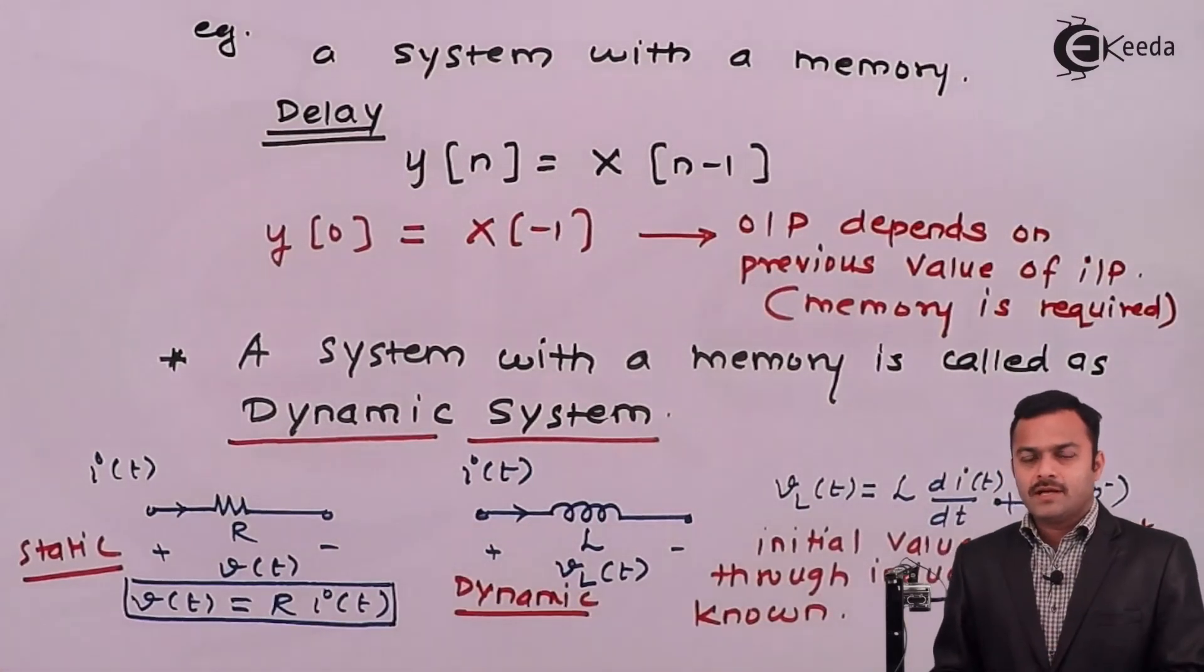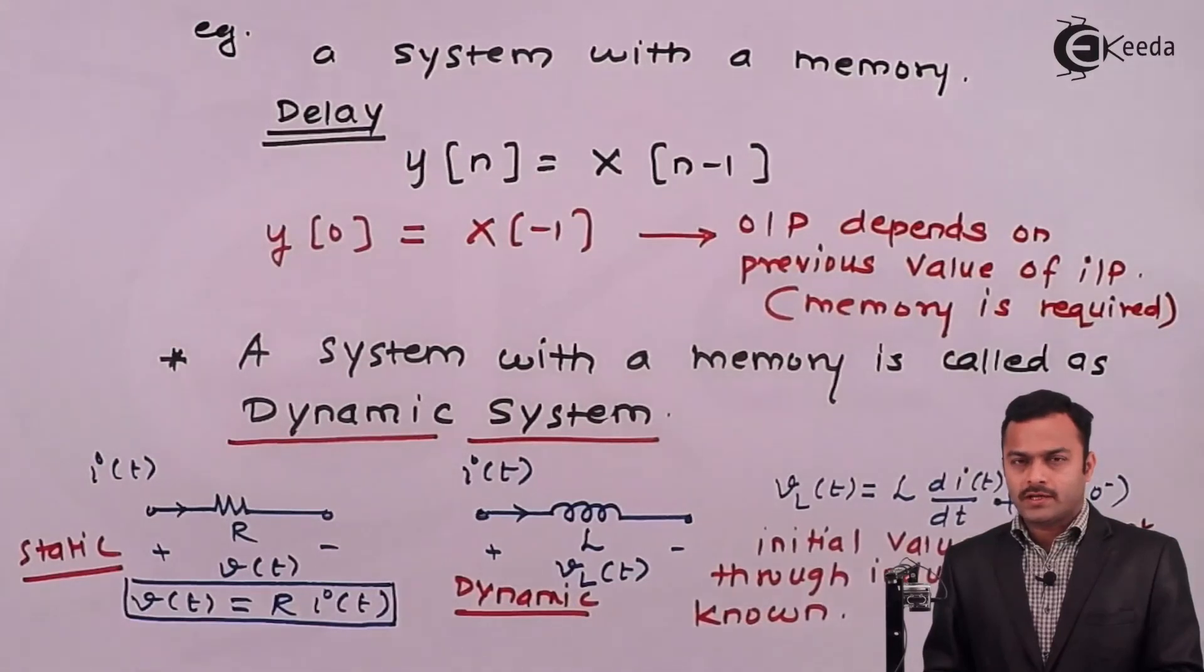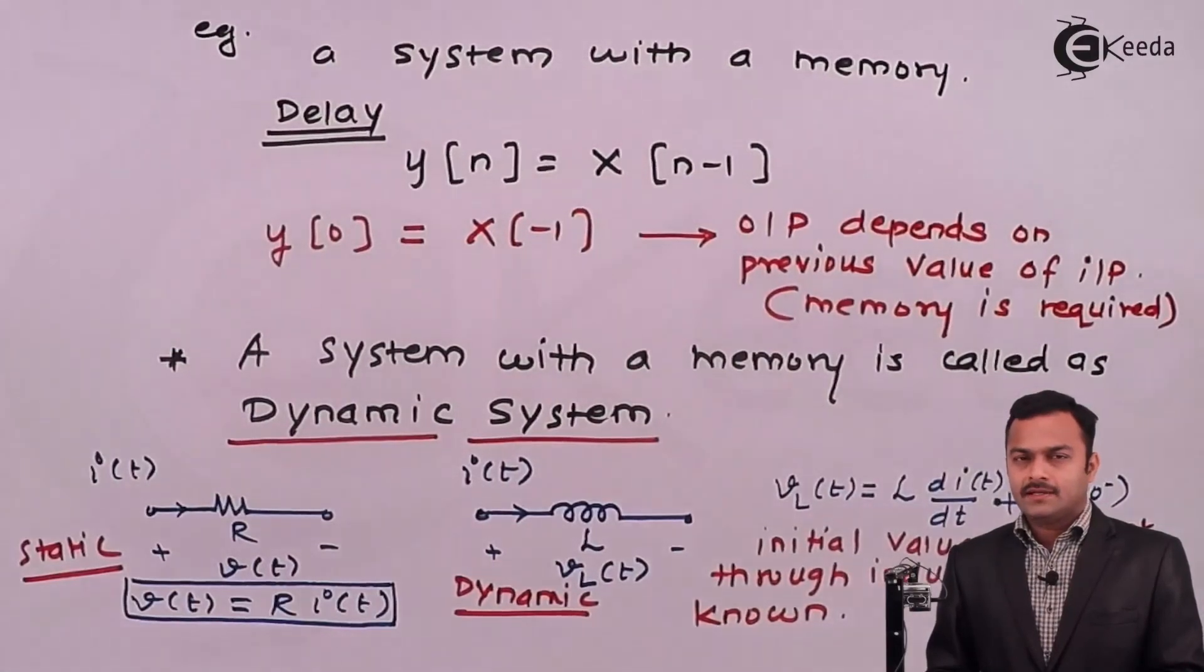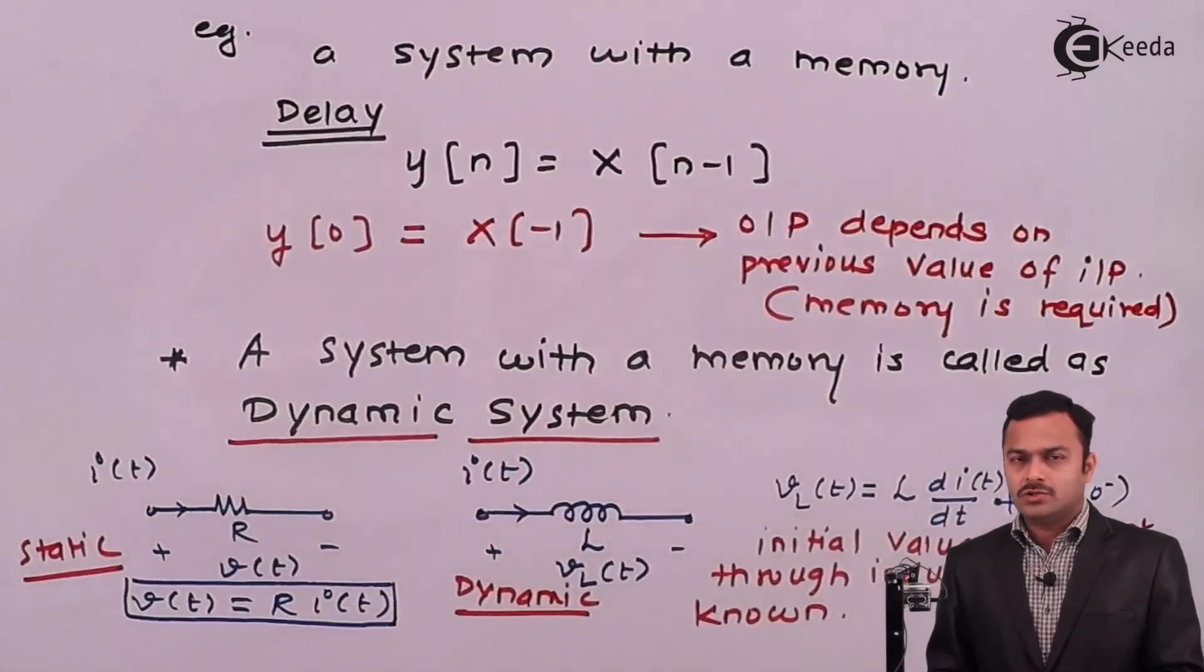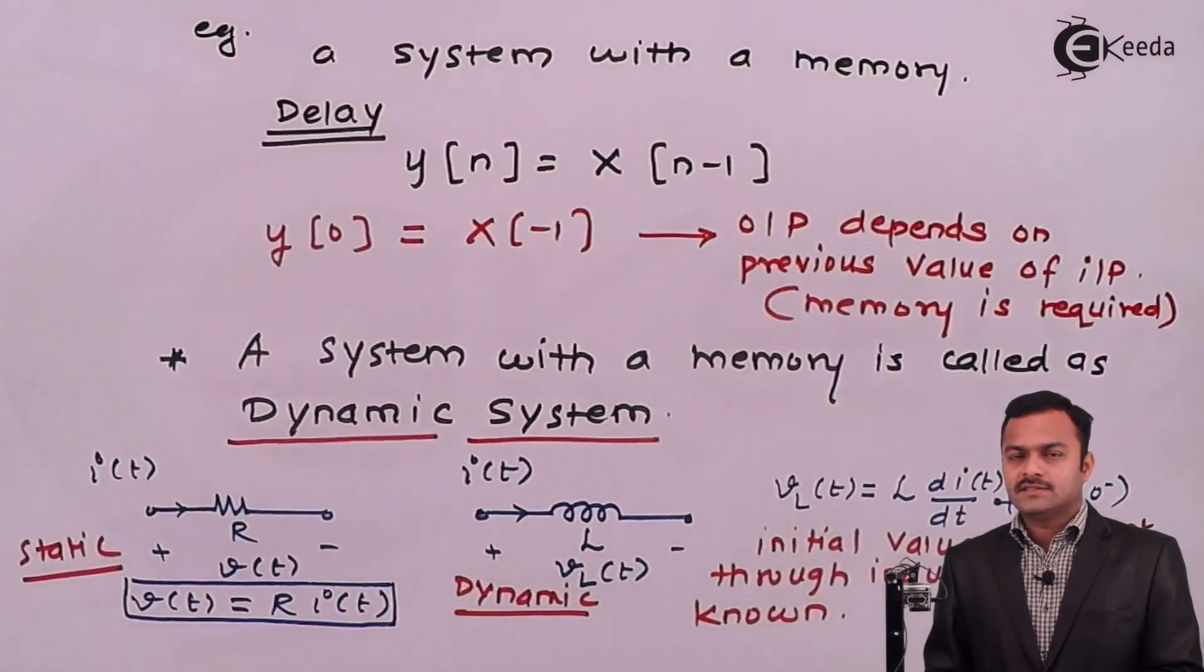In this video we have seen, based on the memory required or not, system can be classified as static and dynamic. Static means memoryless, do not require memory. Output depends only on the present value of input. Whereas dynamic is a system with a memory, can depend upon previous or future values of the input. Hence it's called as a system which is dynamic, required memory. Thank you.